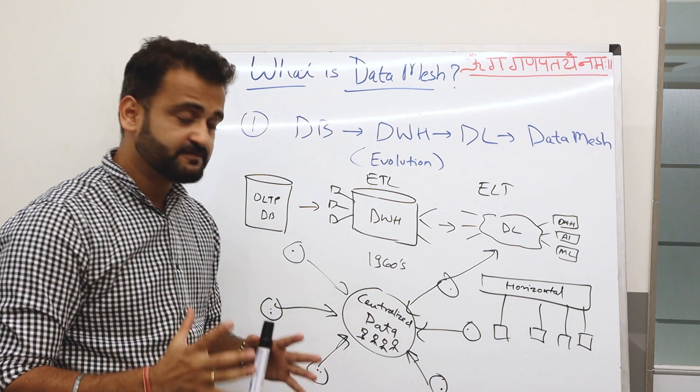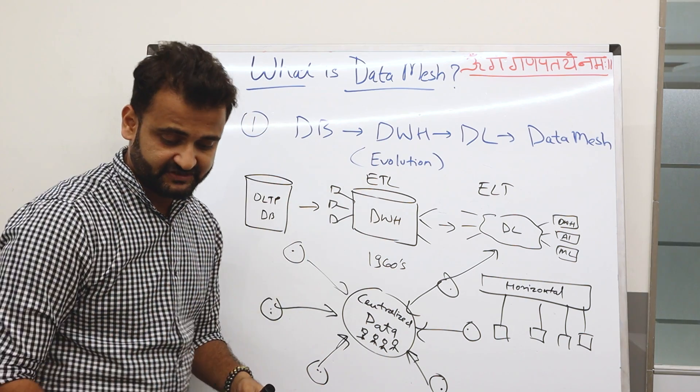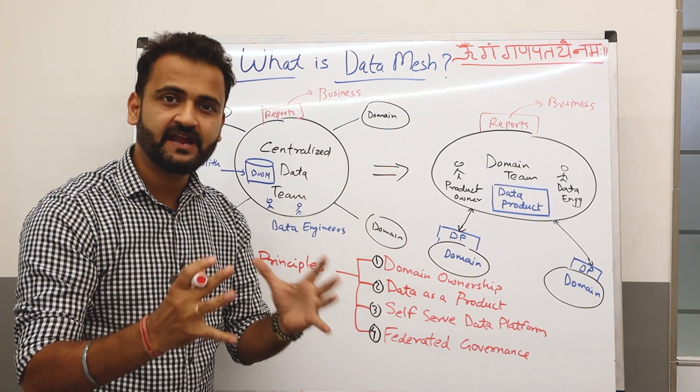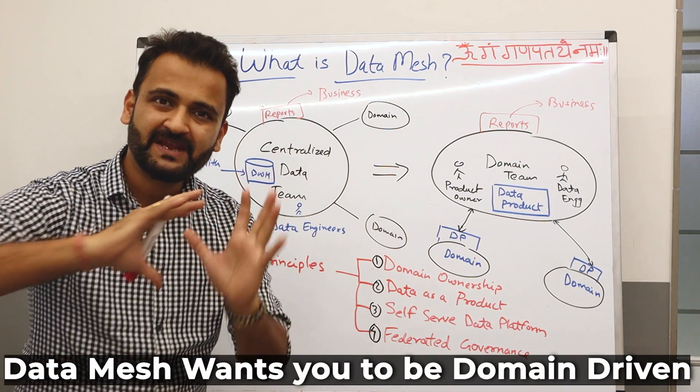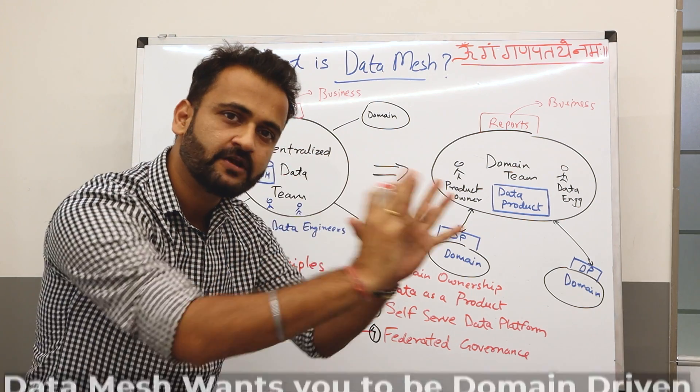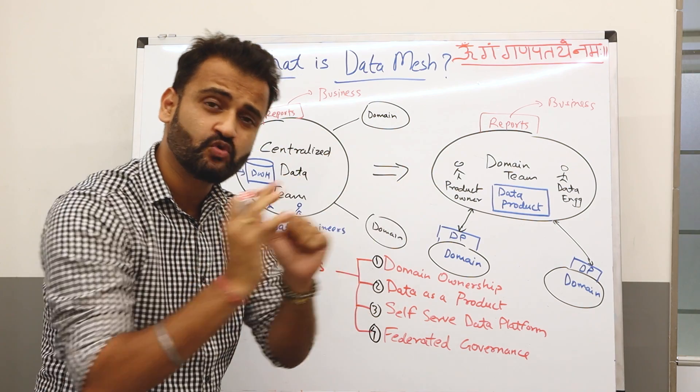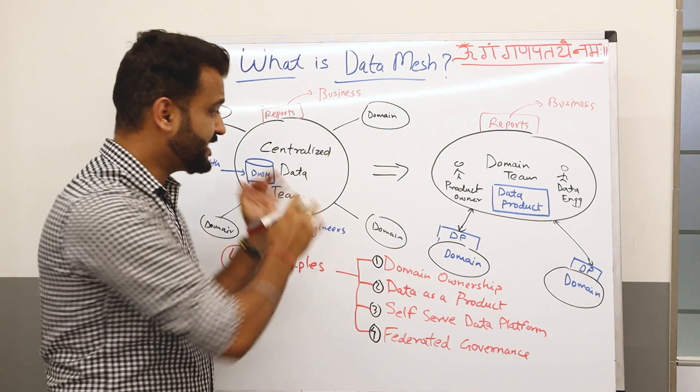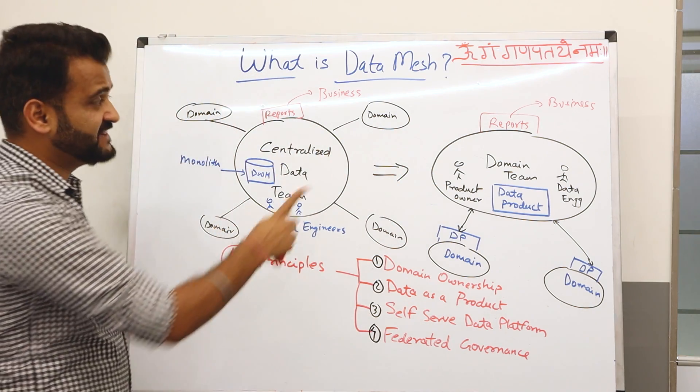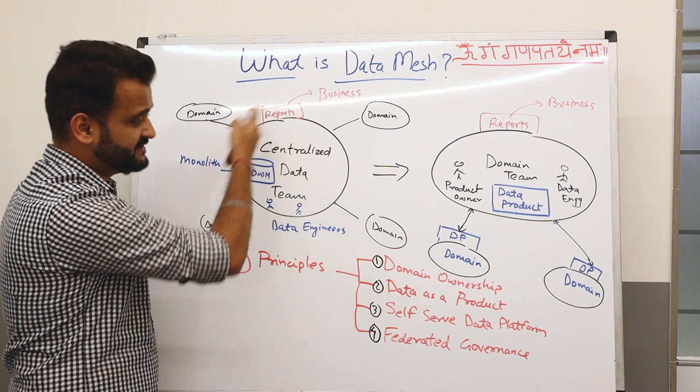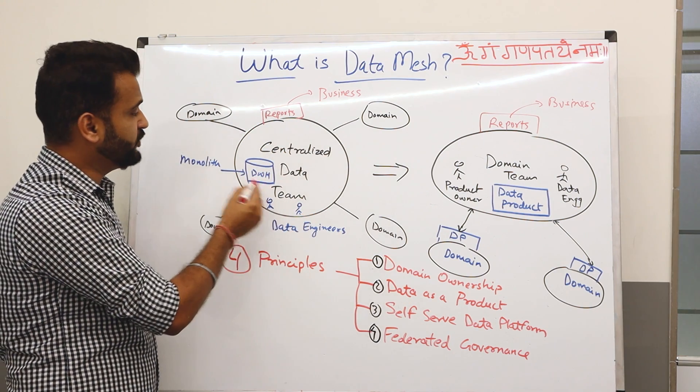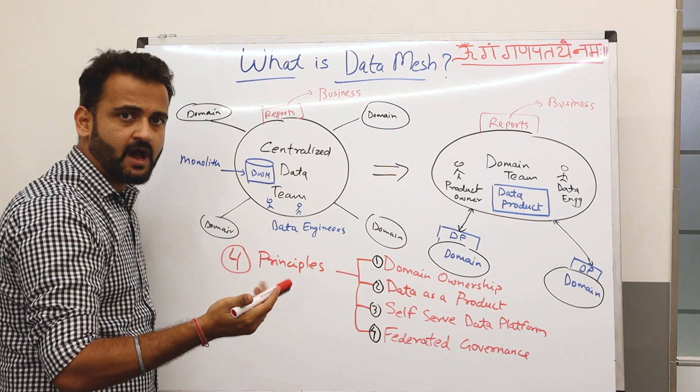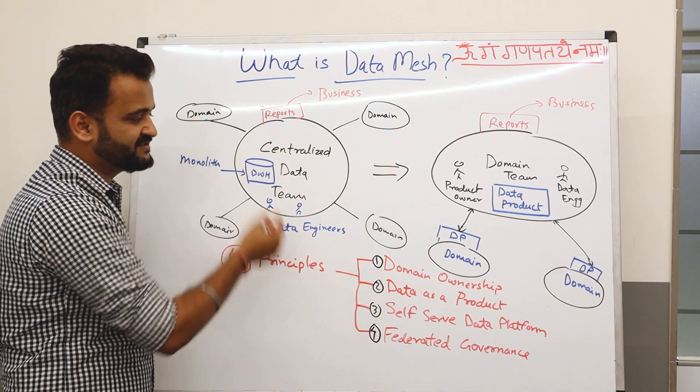From centralized data team, Data Mesh wants you to be domain driven, to move towards the domain, move the data towards the source, towards the domain, not at the centralized location. And that's what you see on the left. This is our traditional data lake, data warehousing setup, where you will have your monolithic data warehouse sitting at the center, all the domains trying to get the data.